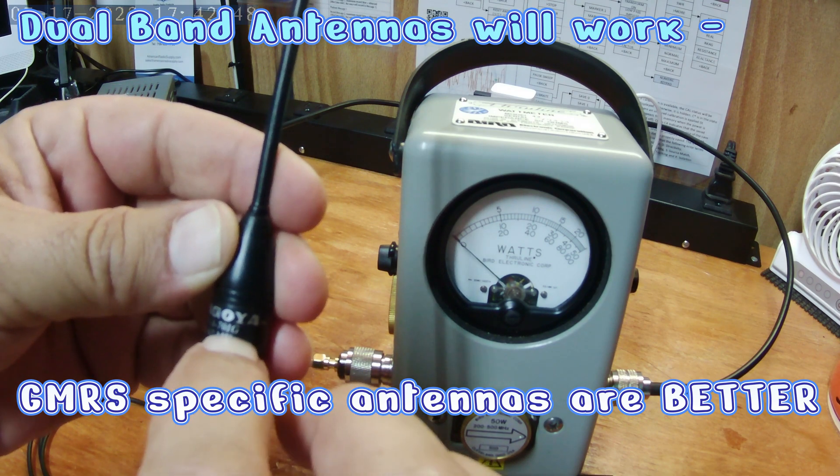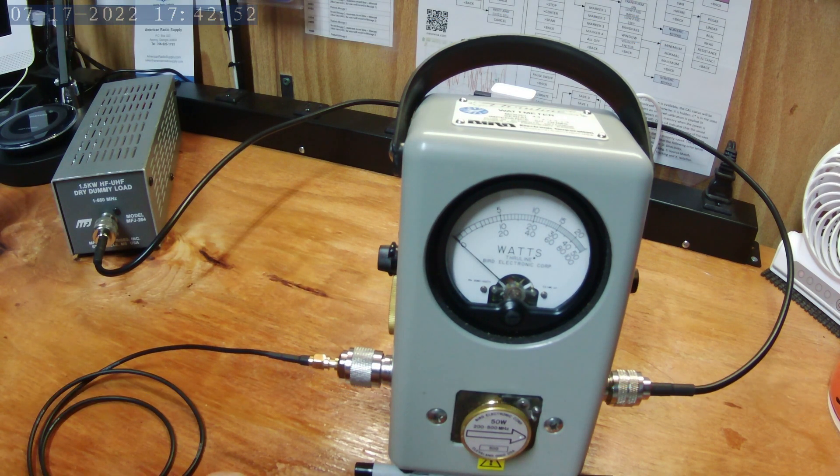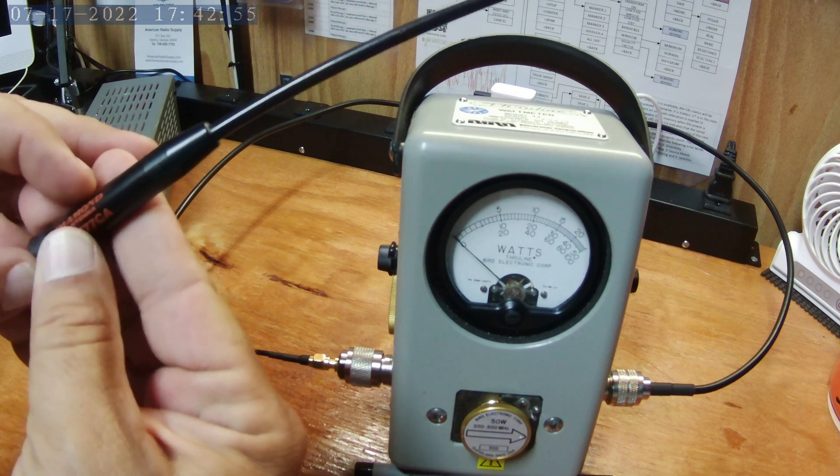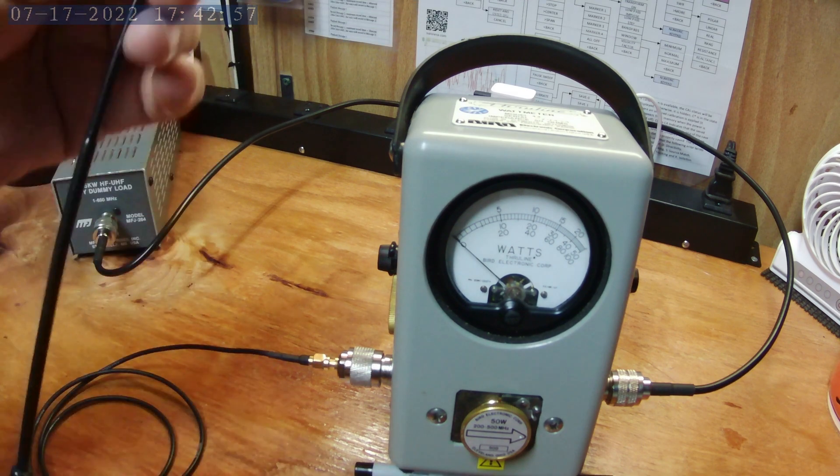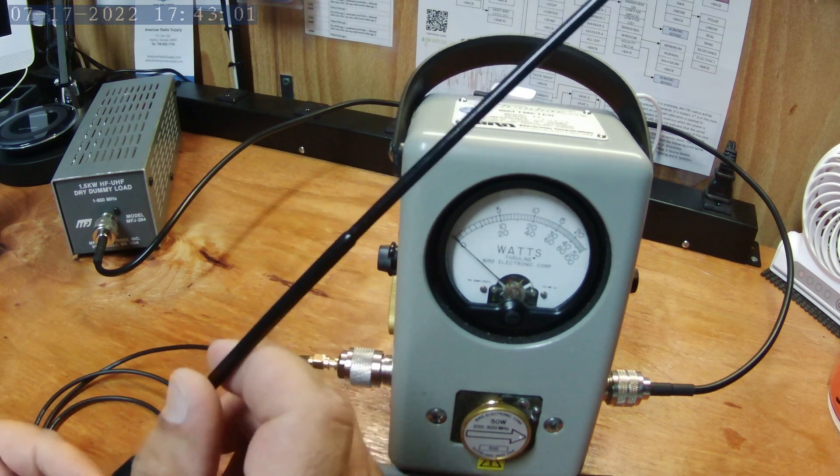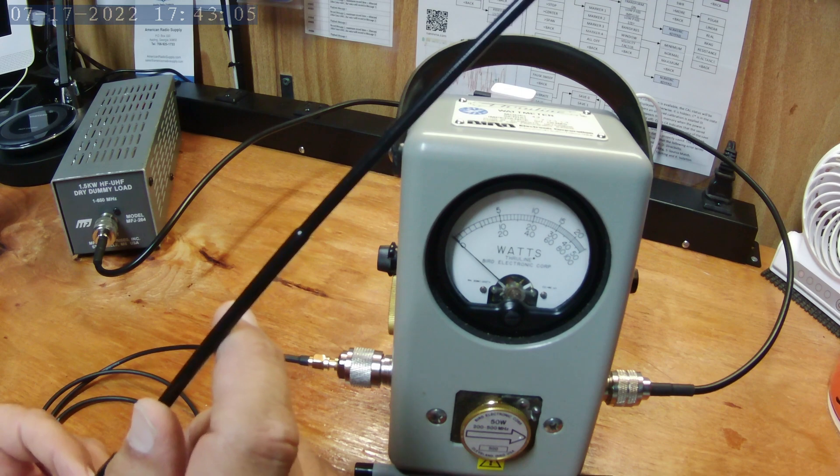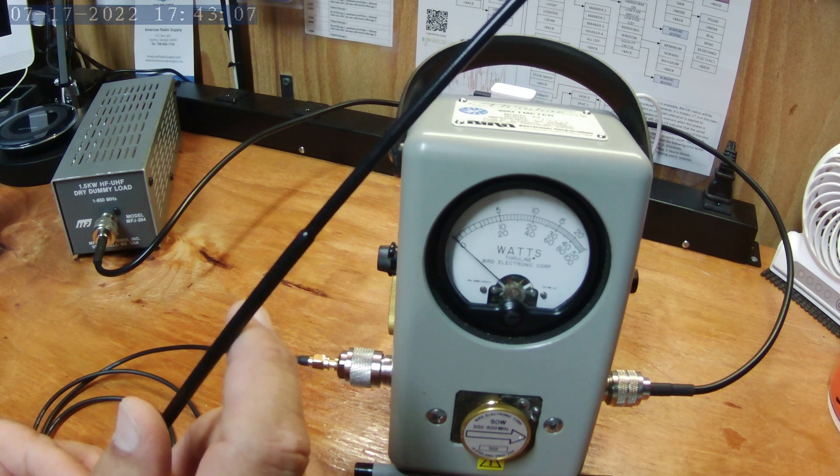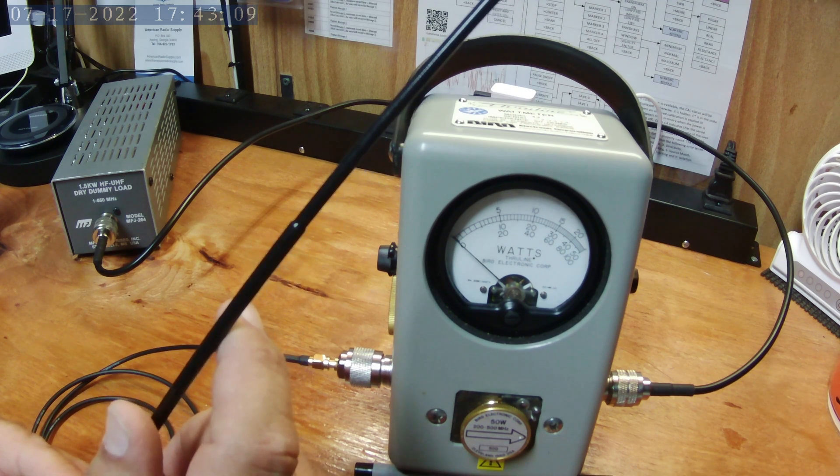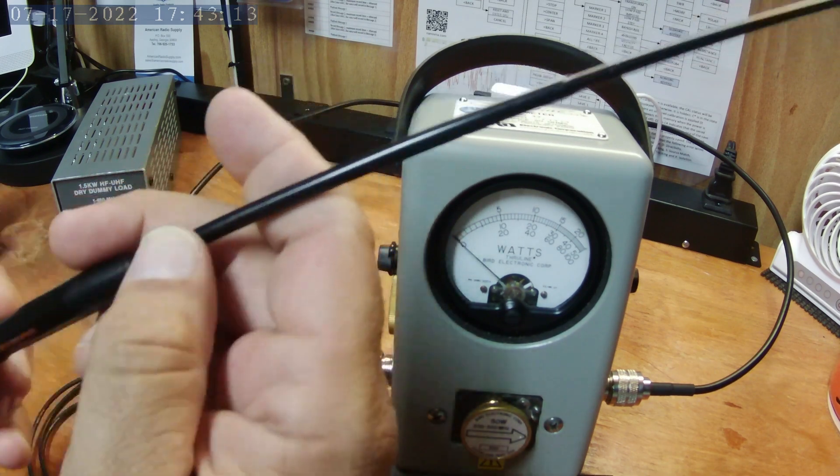And if you go with Nagoya, a lot of them will throw a G to signify GMRS versus something like this diamond that's a dual band. It'll get the job done, but it's not truly tuned for what you're wanting to do on the GMRS frequency. So you can get much better output, range, signal if you go with the G at the end.